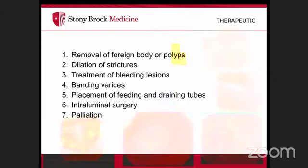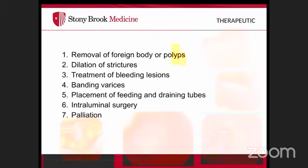Begin with oral intubation using a bite block to protect the teeth. Some providers use lidocaine spray to numb the back of the throat. Introduce the scope through the mouth, follow the curve of the tongue using the large wheel, identify the epiglottis, stay posterior, visualize the oropharynx and vocal cords, then advance through the piriform sinus toward the upper esophageal sphincter.